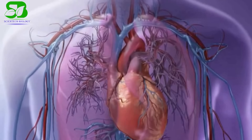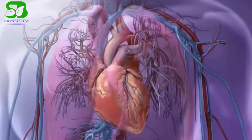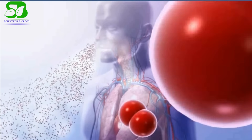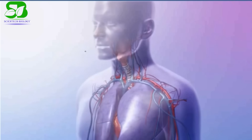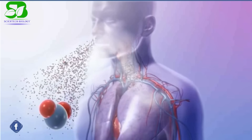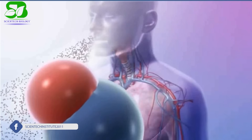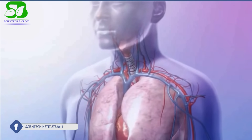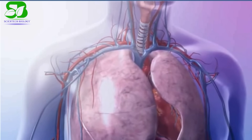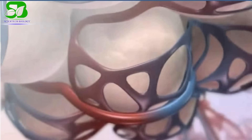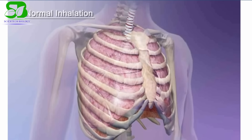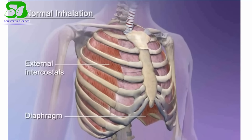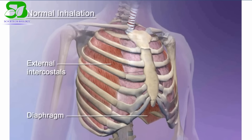Now let's see how gaseous transportation takes place in our body. During normal inhalation, air containing oxygen passes through the nose and mouth to the lungs. During normal exhalation, air containing carbon dioxide and other waste passes out the same path. This process of moving air in and out of the lungs is called pulmonary ventilation, or breathing. During normal inhalation, the diaphragm and external costal muscles contract and the rib cage elevates, so air rushes in.